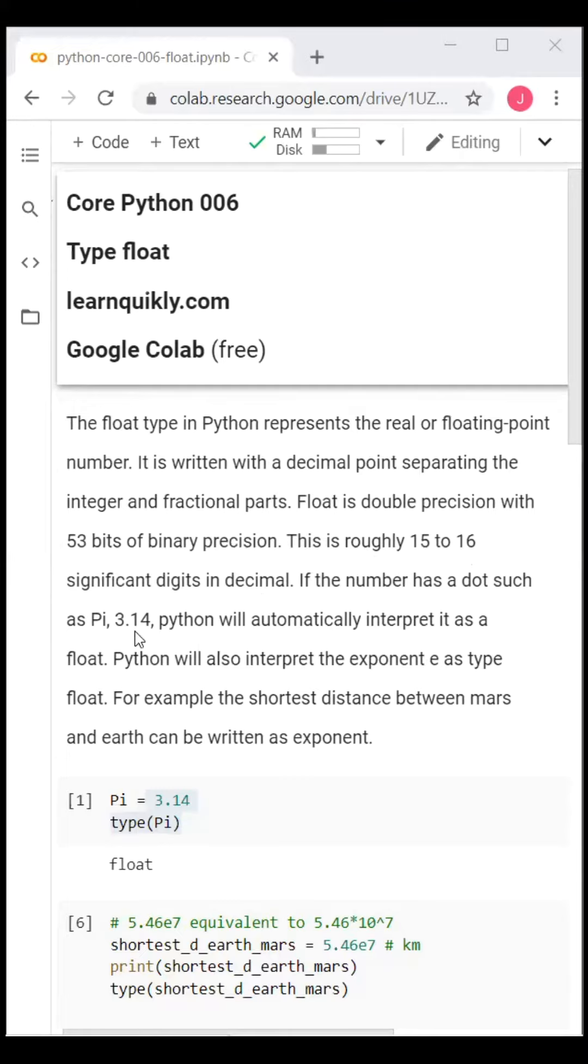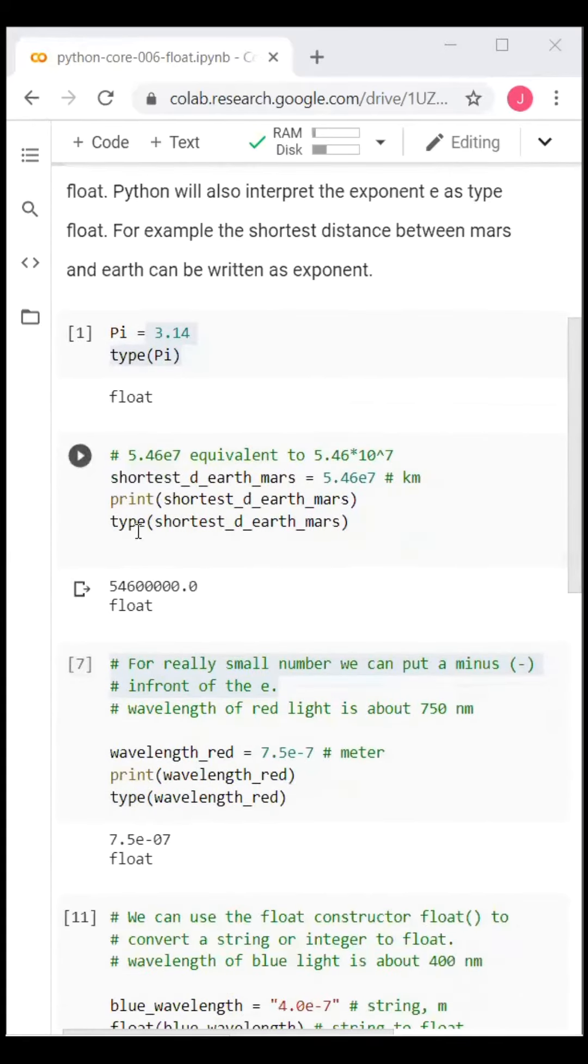If the number has a dot such as 3.14, Python will automatically interpret it as a float. Python will also interpret the exponent E as type float.